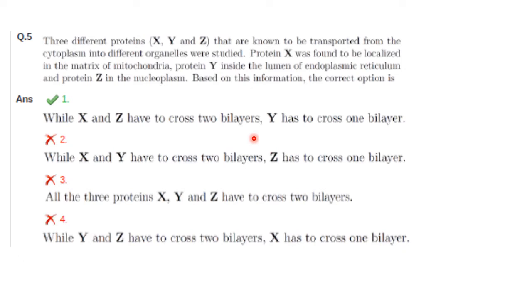Mitochondria contain two membranes — the outer mitochondrial membrane surrounds the inner membrane with a small intermembrane space in between, and the inner membrane surrounds the matrix. So protein X, localized in the mitochondrial matrix, must cross two bilayers. The nucleus is surrounded by two concentric membranes — the inner and outer nuclear membrane — so protein Z must also cross two bilayers. The answer is option 1: X and Z cross two bilayers, Y crosses one.